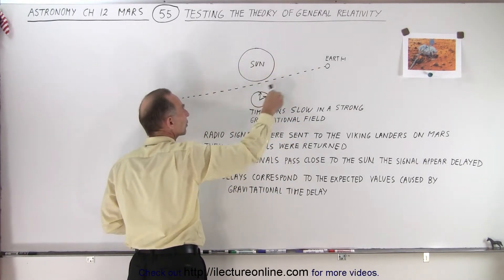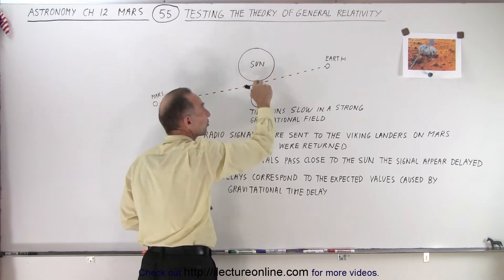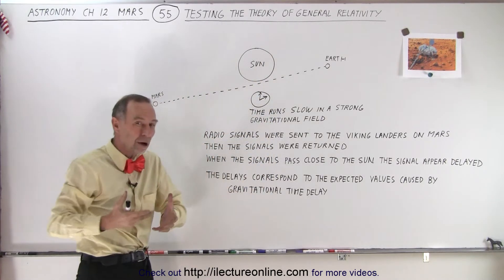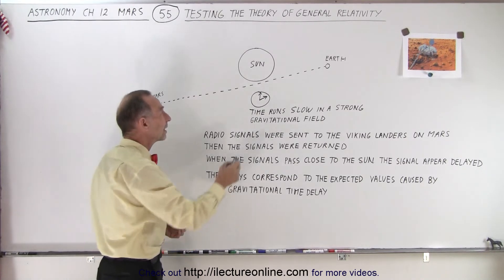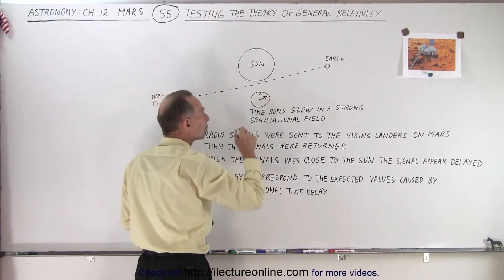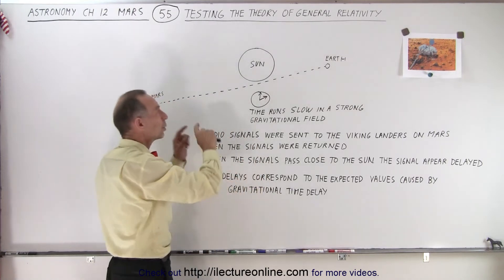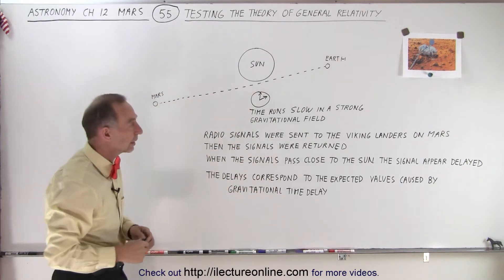That means that over here the signal would go through a portion of space that is under the influence of the gravitational effect of a large body like the Sun, which means that in this location time would run more slowly than in other places in space.